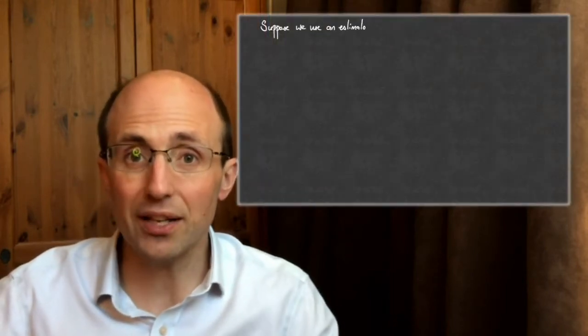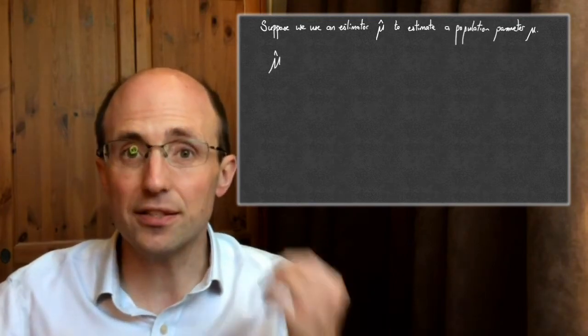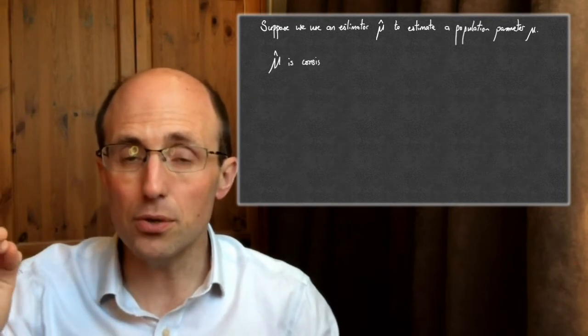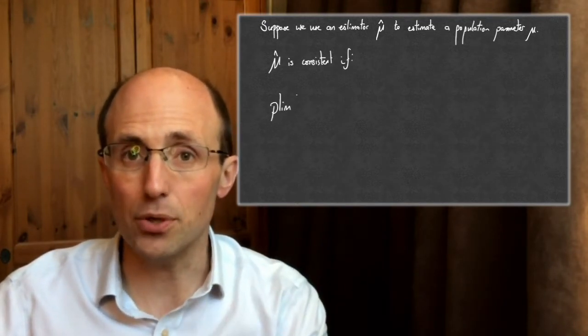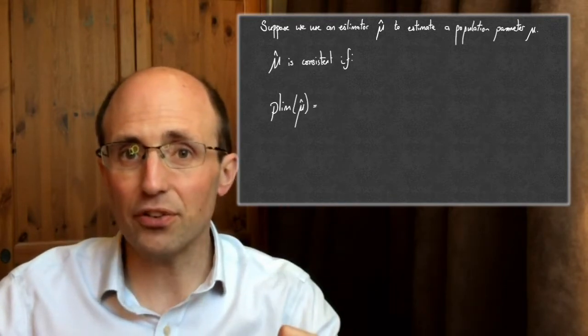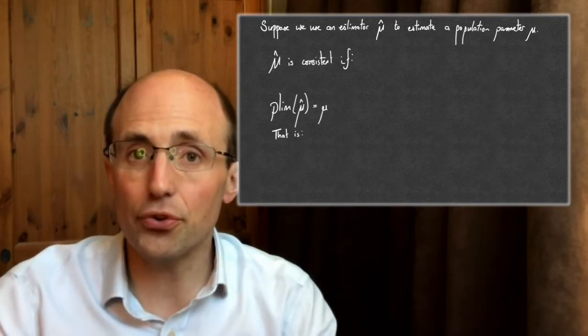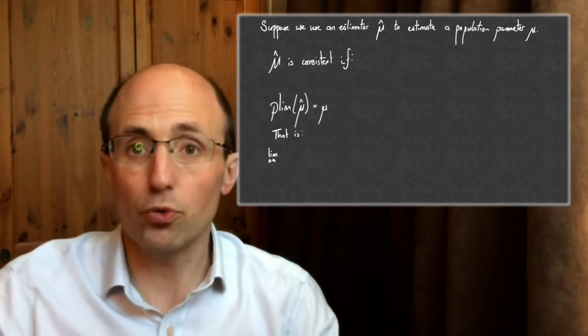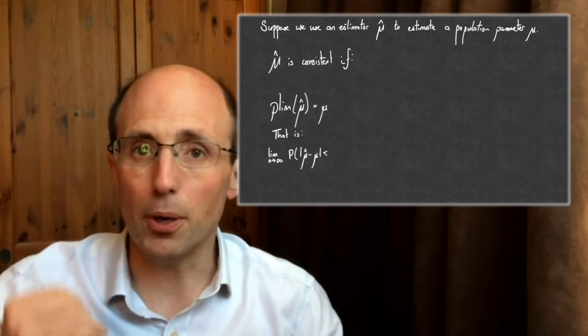An estimator is consistent if it converges in probability to the true population parameter being estimated. Consider an estimator mu hat estimating some population parameter mu. Mu hat is consistent if the probability limit of mu hat equals the true population parameter mu — that is, as the sample size gets very large, the probability that mu hat is exceedingly close to the true parameter converges towards 1. We say it is converging in probability to the true population parameter.